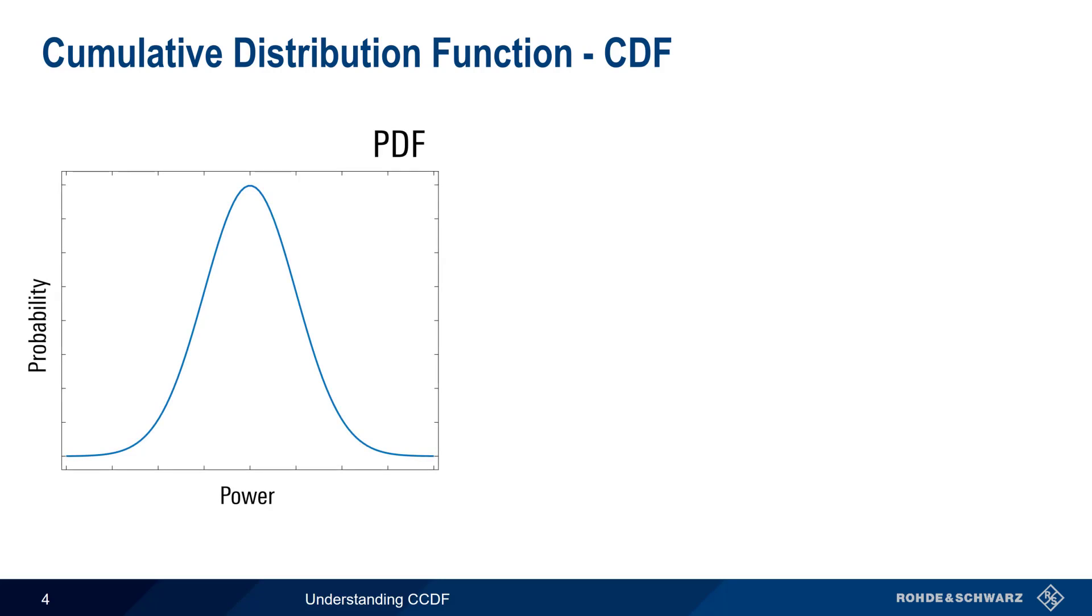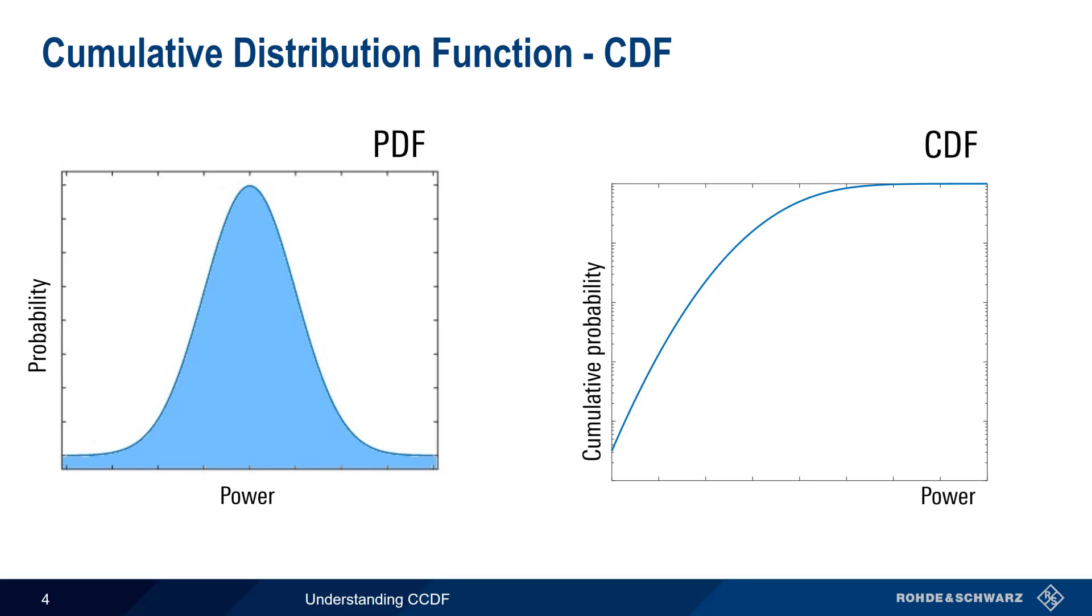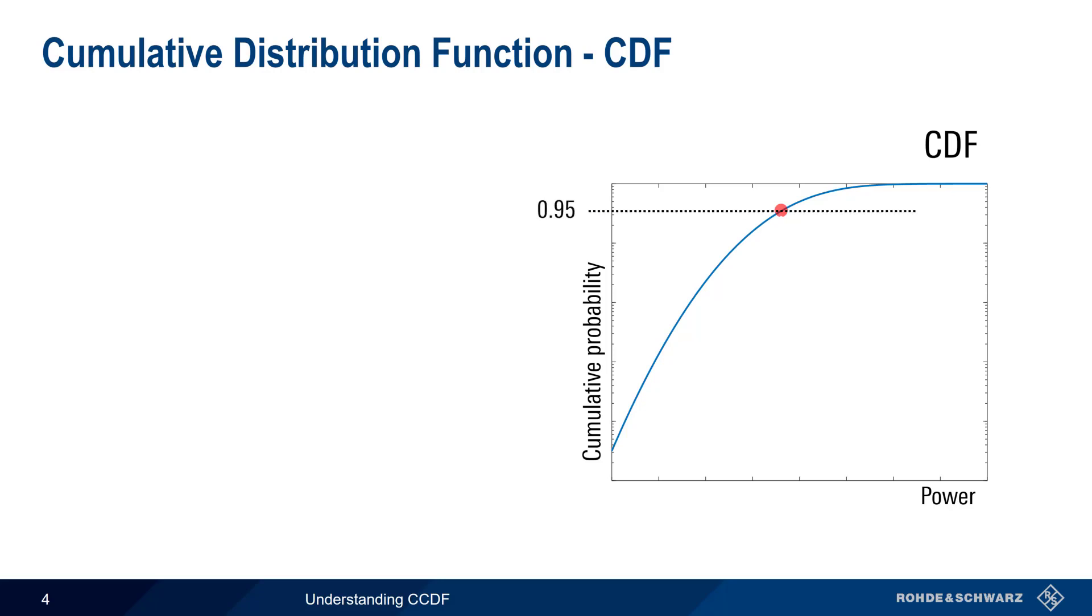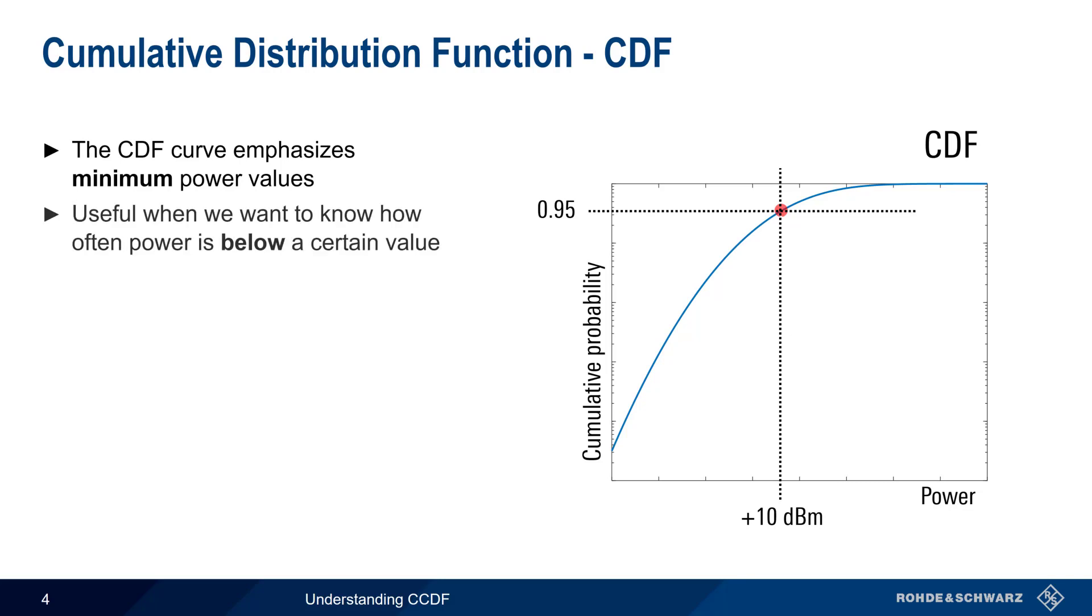If we take our Probability Density Function and integrate over the entire function, the result is the Cumulative Distribution Function, or CDF. Let's pick a point on our CDF curve. At this point, we can say that 95% of the time, the power level is plus 10 dBm or less. CDF curves emphasize minimum power values. In other words, a CDF curve is useful if we want to know what percentage of time the signal's power is below a certain value.